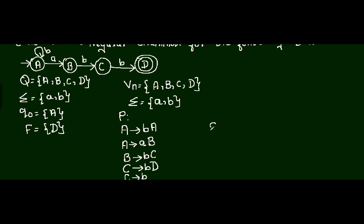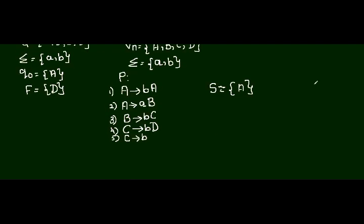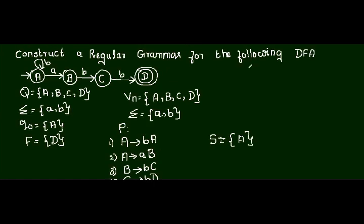Next is the start symbol. Looking at the first production, the non-terminal before the arrow is A. So the start symbol is A. This is how we construct regular grammar from a DFA. If it is an NFA also, we will be using the same procedure.